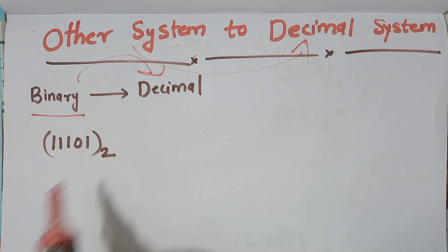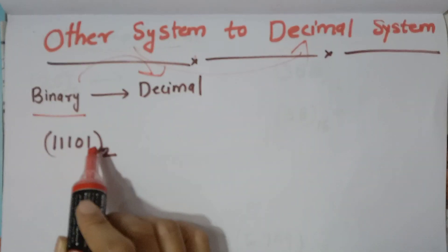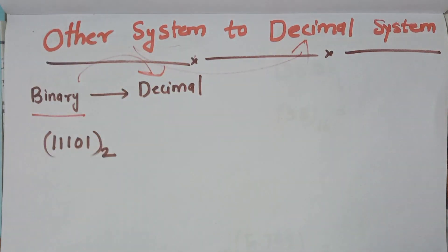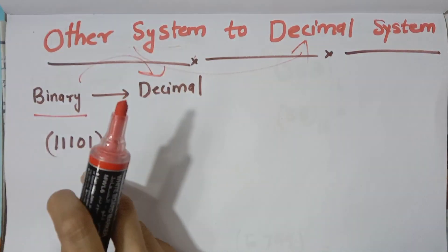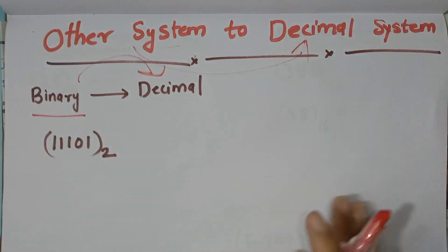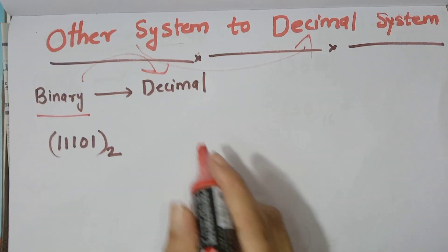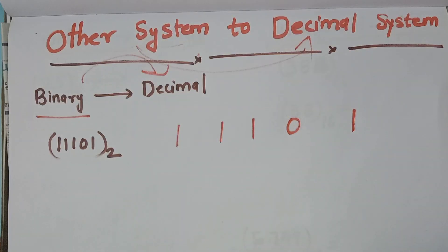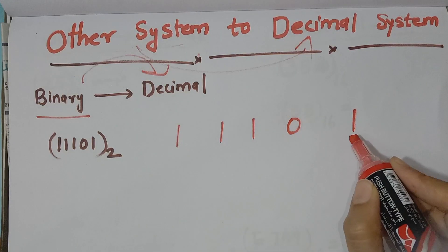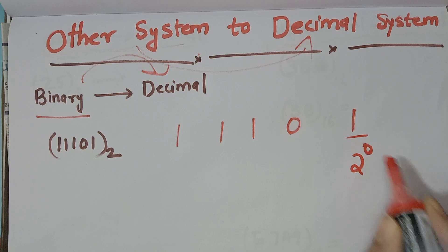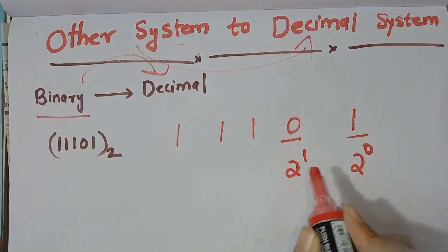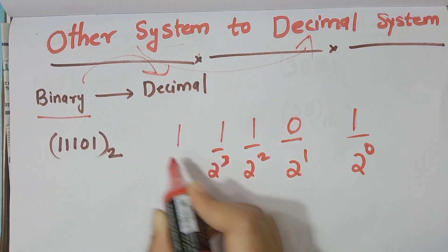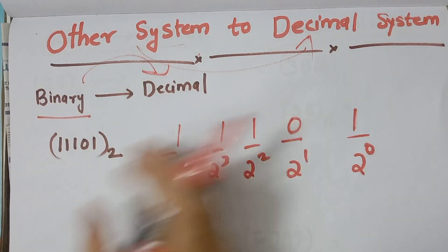We will write a binary number: 11101, base 2. This is a binary number. We will convert it to decimal. The digits are 1, 1, 1, 0, 1. The positions are: 2 raised to 0, 2 raised to 1, 2 raised to 2, 2 raised to 3, and 2 raised to 4.